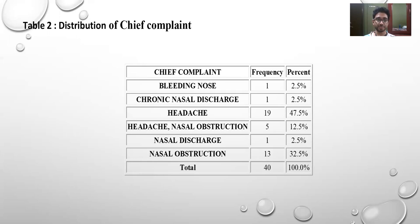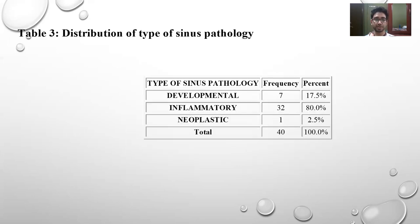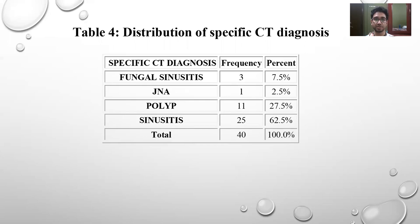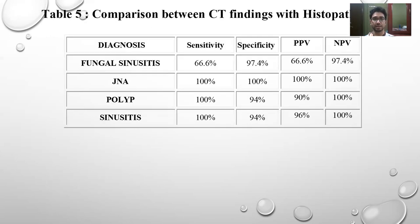The distribution of chief complaints shows that headache has the highest frequency, comprising 47.5 percent of total complaints. The distribution of type of sinus pathology includes developmental, inflammatory, and neoplastic, in which inflammatory accounts for 32 cases representing 80 percent of total cases. Distribution of specific CT diagnoses includes fungal sinusitis, juvenile nasopharyngeal angiofibroma, polyp, and sinusitis, among which sinusitis had 62.5 percent of involvement. Sinusitis had the highest sensitivity and negative predictive value, JNA had 100 percent across all metrics, and fungal sinusitis had the lowest sensitivity and PPV.